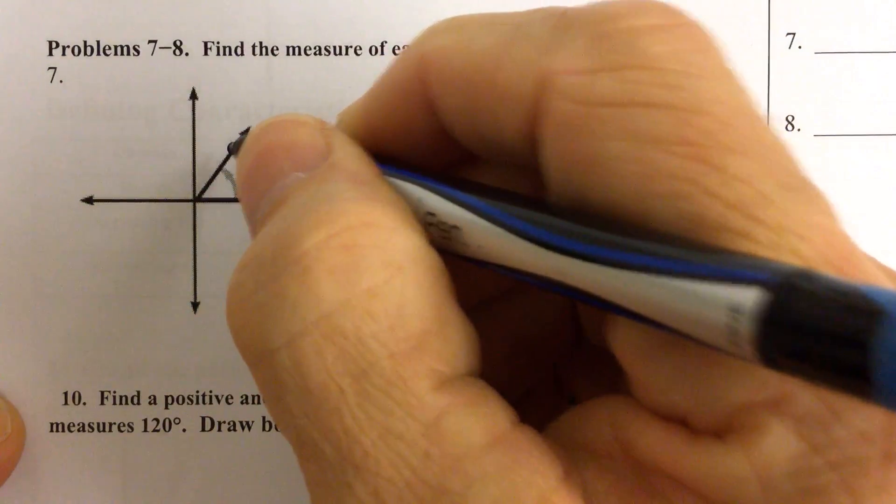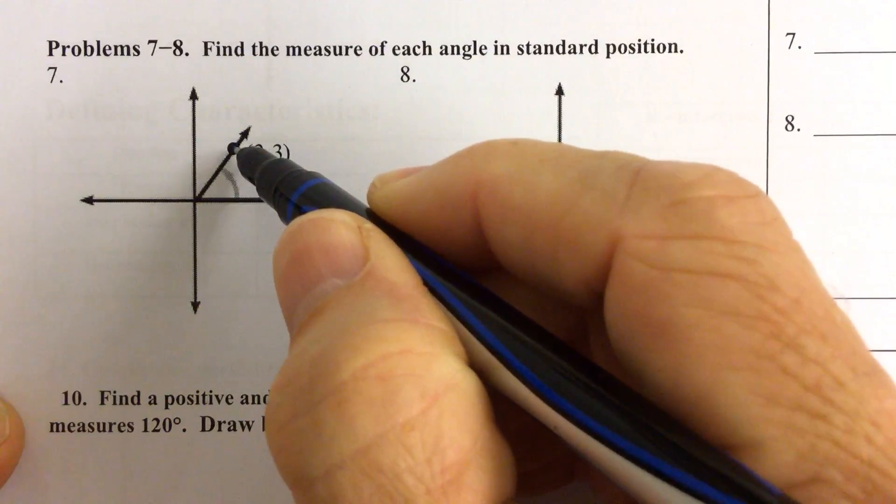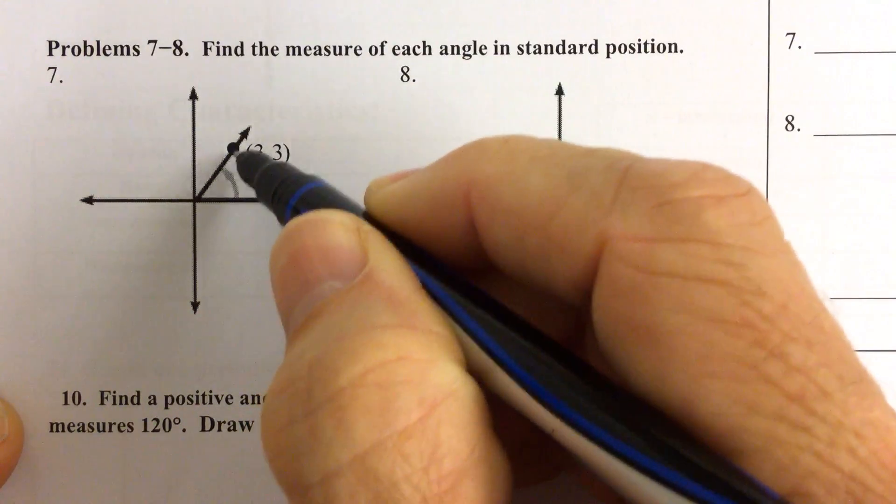So for number seven, we know that the terminal side of an angle goes through the point 3,3. We're just trying to figure out what that angle is right there.